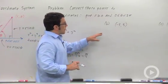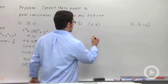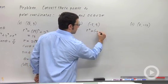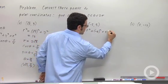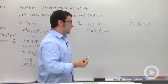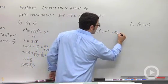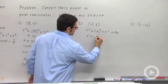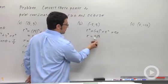Let's try another example. The point (-5, 5). First, r² equals x² plus y². So (-5)² plus 5². That's 25 plus 25, or 50. And that means that r equals 5√2. Again, we picked the positive value.